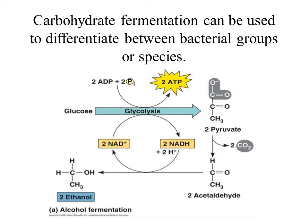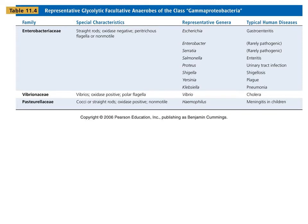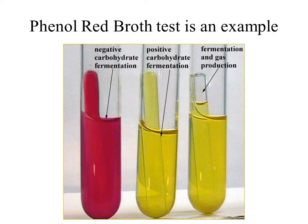We utilize this carbohydrate fermentation test to differentiate between different bacterial groups, especially in the family Enterobacteriaceae. We are going to be able to differentiate between organisms like Escherichia coli and Shigella, or Salmonella and Enterobacter. This is what the phenol red broth test looks like — a series of test tubes with a smaller inverted tube inside, referred to as a Durham tube.